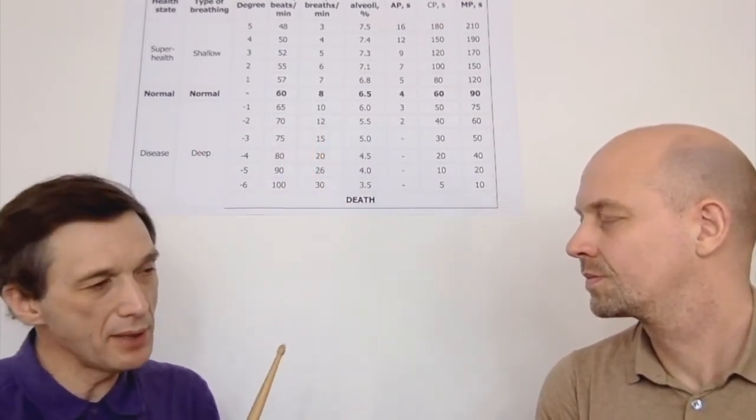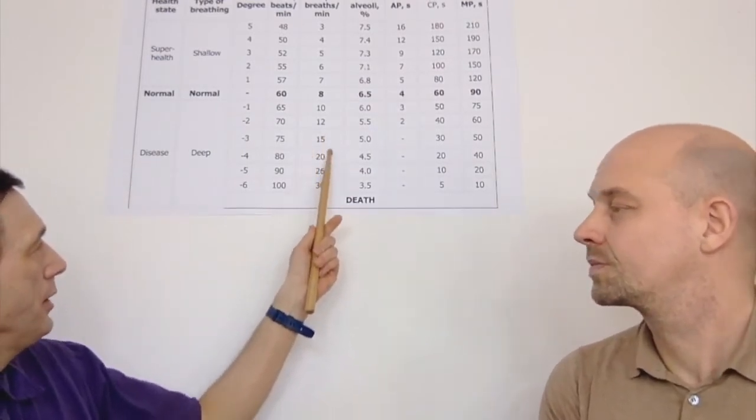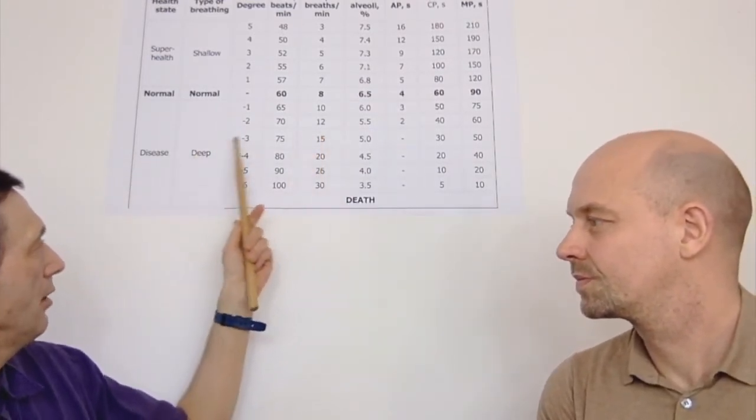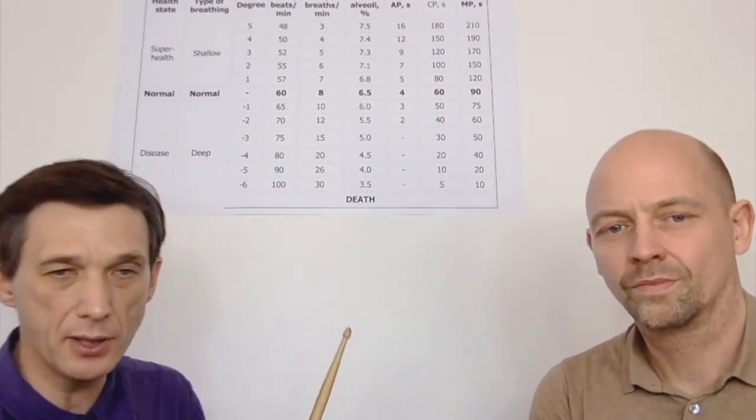But that's the problem. This is what I started about. Modern people, they have somewhere around 15, 20 breaths a minute. And that's the third and fourth degree of sickness according to Buteyko Breathing Kitchens and Dr. Buteyko.